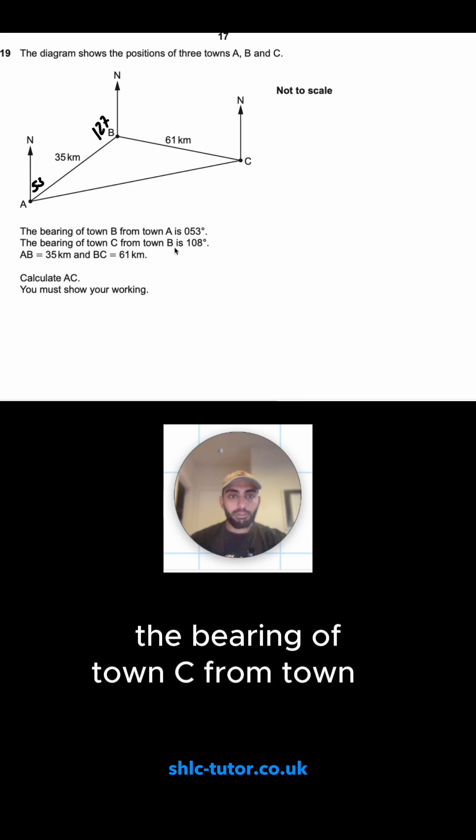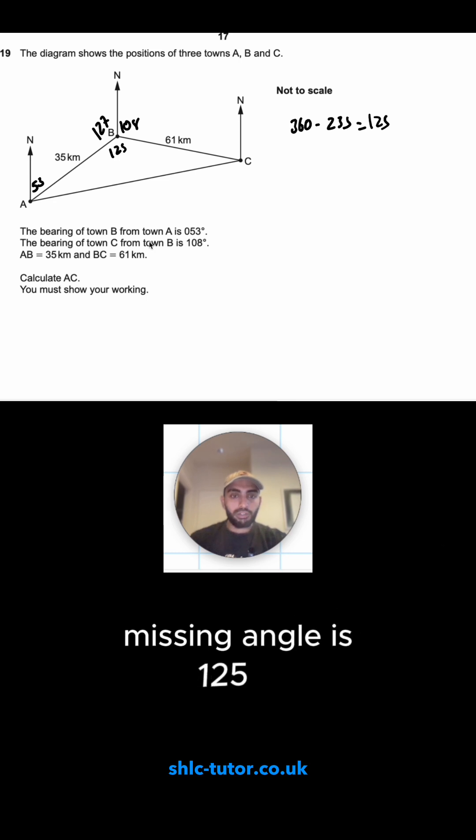The bearing of town C from town B is 108, so this angle is 108. So these two angles add up to make 235, and I've got angles around a point, so I can take it away from 360, which leaves me with 125. This missing angle is 125.